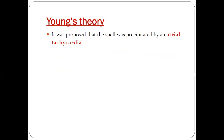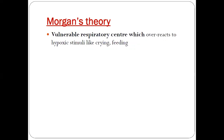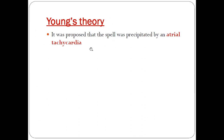Overall there are five theories. Morgan's theory states that there is a vulnerable respiratory center. The respiratory centers are very much immature and vulnerable to any stimulus, such as hypoxic stimuli like crying and feeding. Thus babies are usually seen to have color changes to blue when they cry or during feeding time because of the vulnerable respiratory center. This is Morgan's theory.